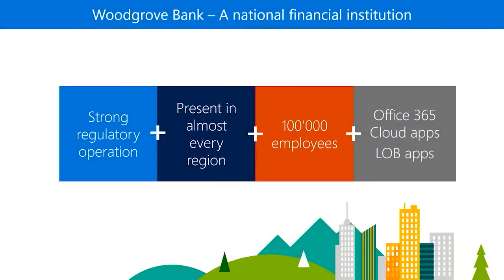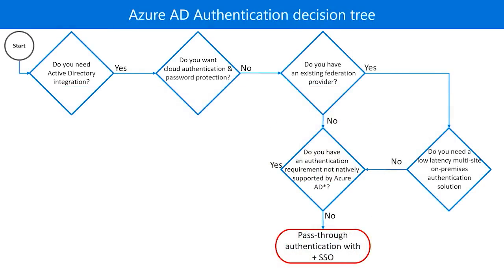My next example is Woodgrove Bank. Woodgrove Bank is a trusted financial institution that has strong regulatory requirements. They require strong password policies for their bank tellers and they also require that they don't log on after hours. They're planning to move to Office 365, use some cloud applications and even some on-premises applications and make them available to tellers and corporate employees. Clearly, Woodgrove Bank cannot use password hash sync because their password policies are different from Azure AD's default policy and they require support for user logon hours that are not supported by Azure AD natively. Going with federation could help solve these requirements but could lead to higher operational costs in terms of managing servers, certificates, and network configuration. Woodgrove Bank should actually use the modern cloud-first approach of pass-through authentication.